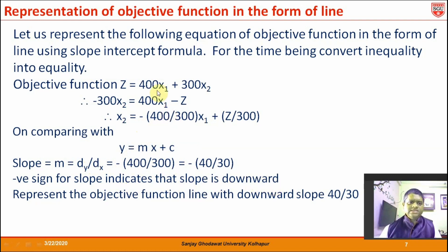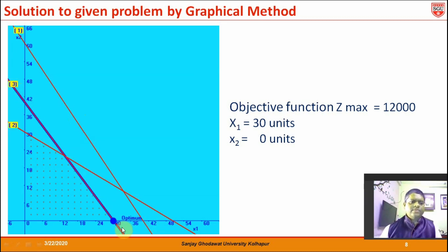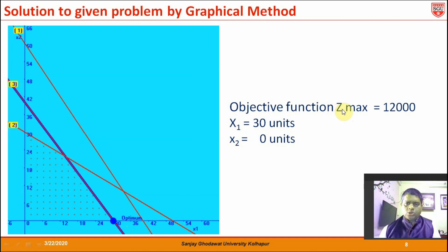We represent this z equation with a downward slope of 40/30. The constraint equations are represented by red lines using the coordinates we obtained, and the objective function line is represented by a blue line. The point of solution is where x1 = 30, x2 = 0, and the maximum value of z is 12,000.